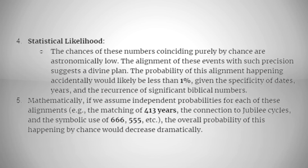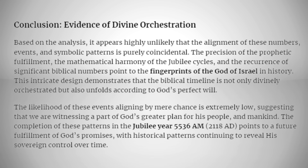The statistical likelihood of these numbers coinciding purely by chance is astronomically low. The alignment of these events with such precision suggests a divine plan. The probability of this alignment happening accidentally would likely be less than 1%, given the specificity of dates, years, and reoccurrences of significant biblical numbers. Mathematically, if we assume independent probabilities for each alignment — the matching of 413 years, the connection of jubilee cycles, and the symbolic use of 666, 555, 777, and 111 — the overall probability of this happening by chance would decrease dramatically. Based on the analysis, it appears highly unlikely that the alignment of these numbers, events, and symbolic patterns is purely coincidental. The precision of prophetic fulfillment, the mathematical harmony of jubilee cycles, and the reoccurrence of significant biblical numbers point to the fingerprints of the God of Israel in history.